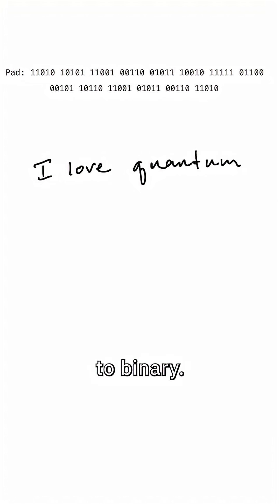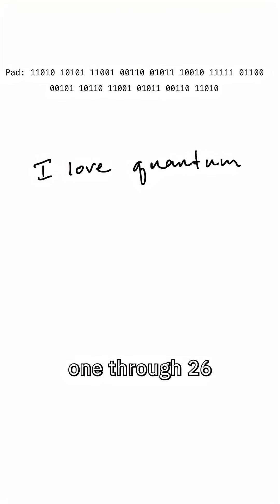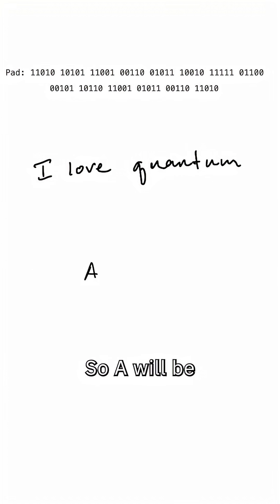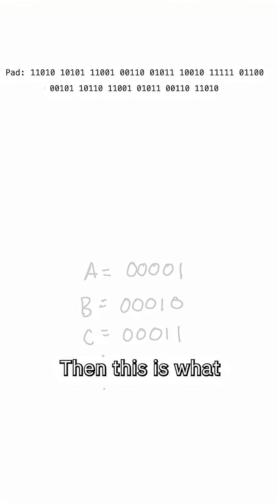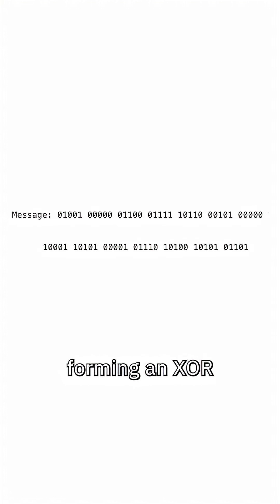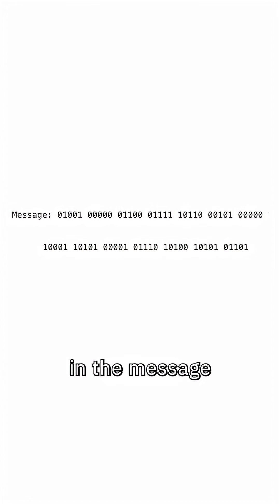First, we convert the letters in our message to binary. Each letter A through Z will correspond to the numbers 1 through 26 written in binary, so A will be 00001 and so on. Then this is what the message becomes. We encode the message by performing an XOR between each bit in the message and its corresponding bit in the one-time pad.